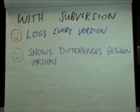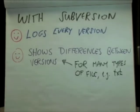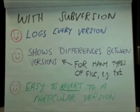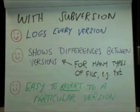For many types of files, such as text files, Subversion can also show us the exact difference between any two versions. It's also easy to make the working copy revert to any previous version you want. So Subversion keeps track of every version, and lets us see exactly what's changed between versions, and it lets us go back to a particular version in the past.